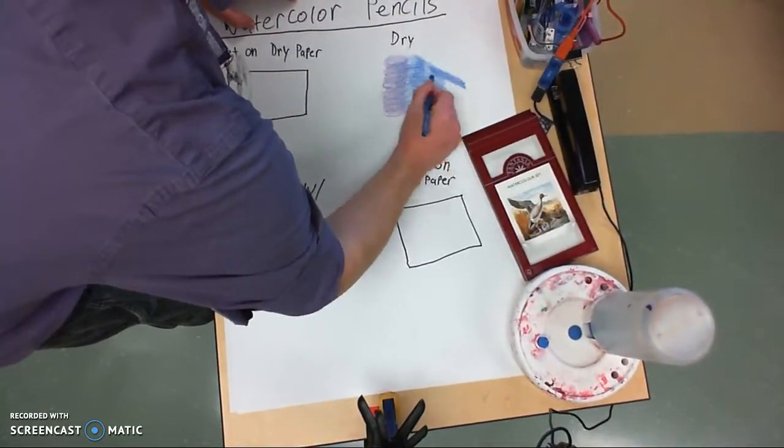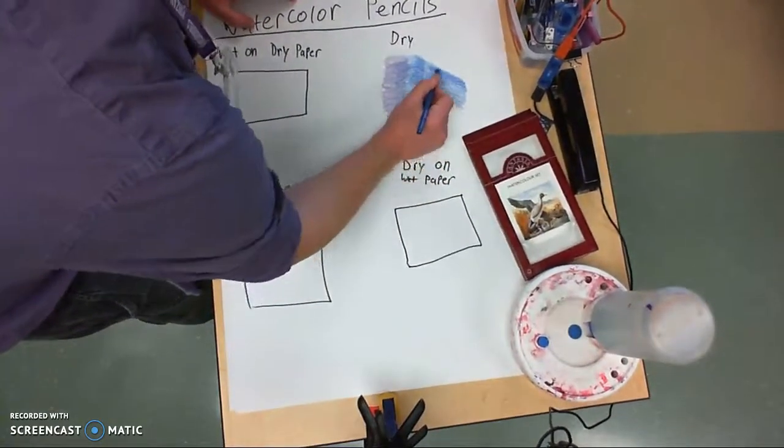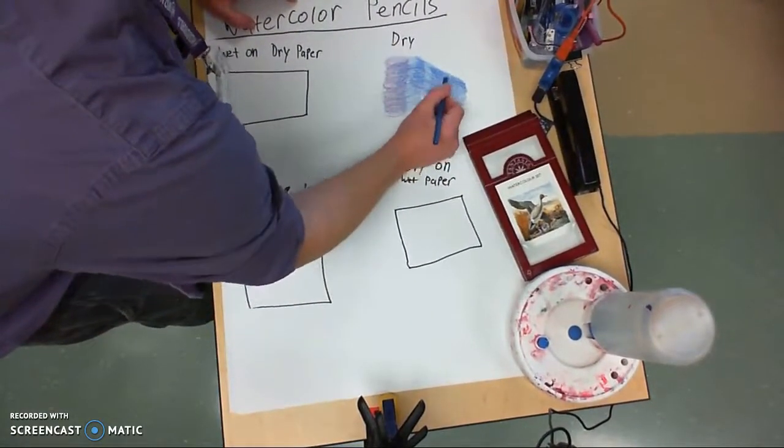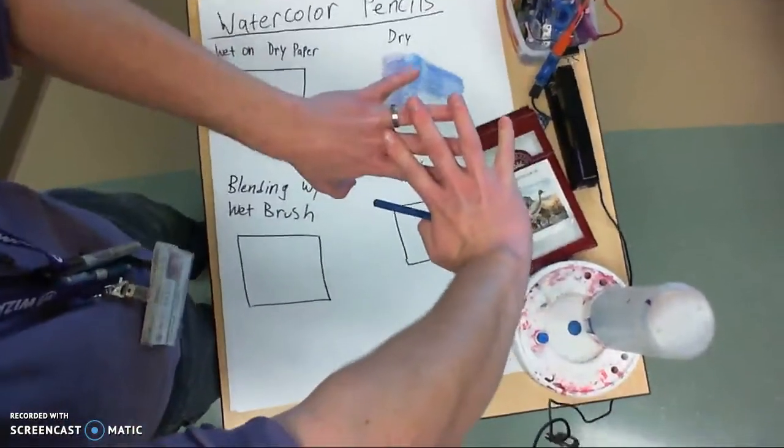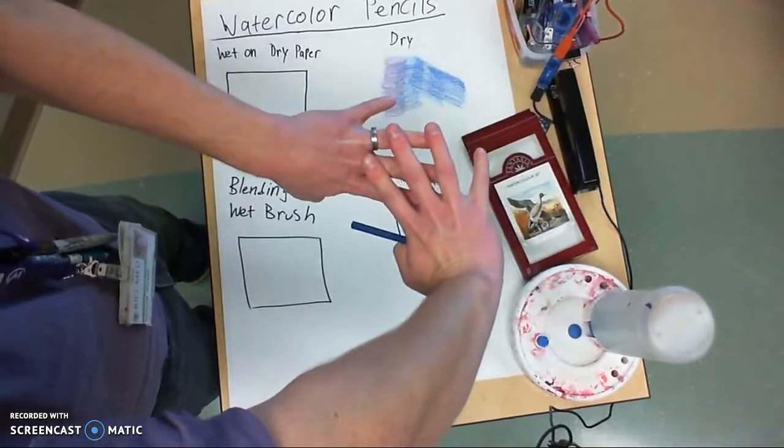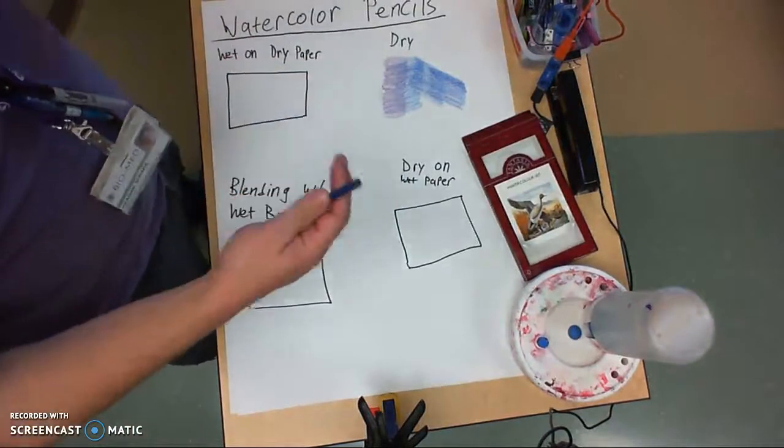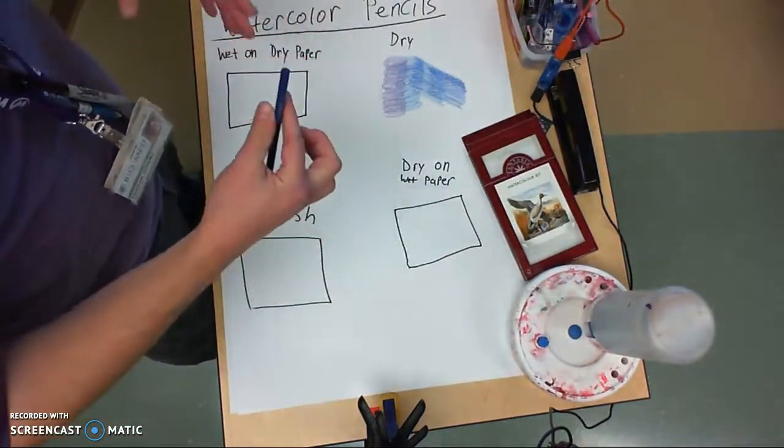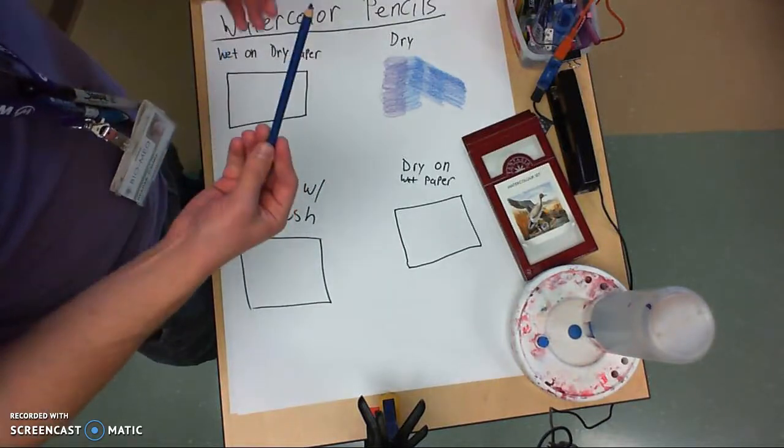you can see that there's like this weird band that develops here and that's because of the way that you're going over the color pencil like this. That's going to create these areas of dark and light that are almost like stripes which if you're going for stripes can be handy but if not then that's something you want to watch out for.